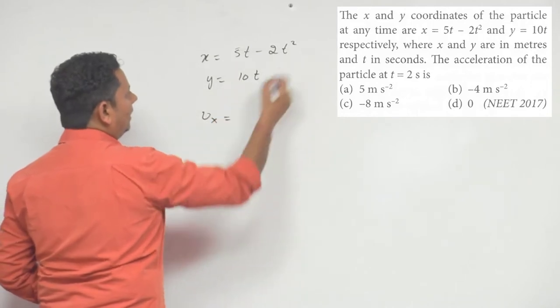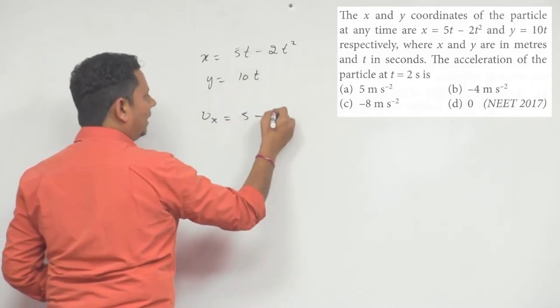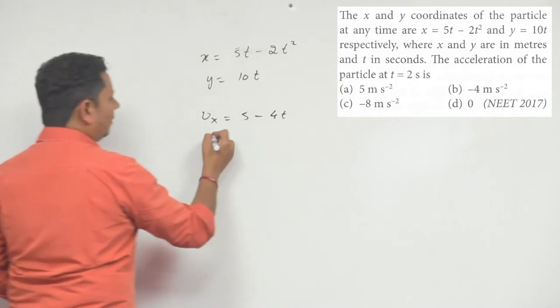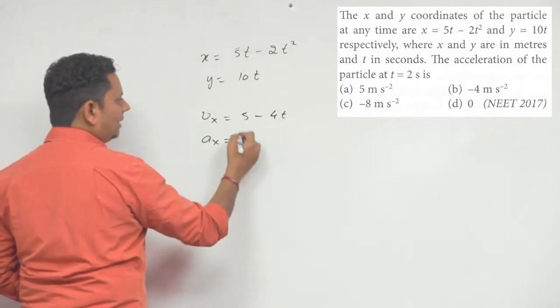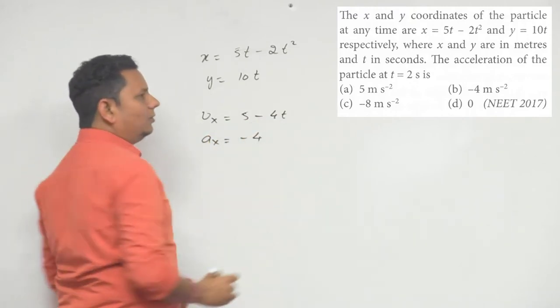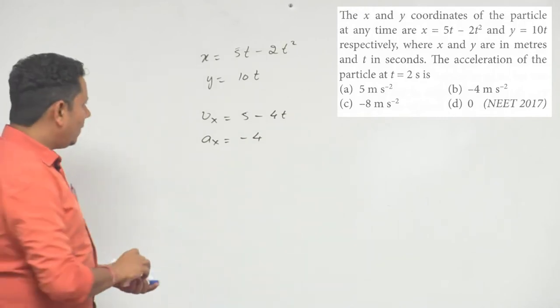Velocity nikaalne ke liye aap kya kareenge? Ek baar differentiate kareenge, so vx equals 5 minus 4t. Ek baar differentiate kareenge x direction me to get acceleration. So, this will be equal to minus 4. All right.